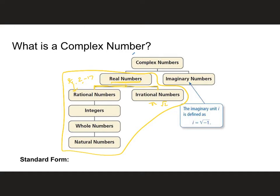However, complex numbers are kind of like a bigger number set. A subset of complex numbers are imaginary numbers. In order to deal with imaginary numbers, we have to create a whole new unit: i. And i is equal to the square root of negative 1. So anytime we see the square root of negative 1, we replace it with the letter i.